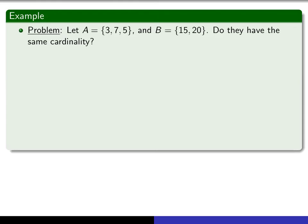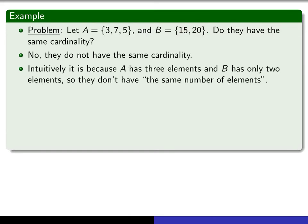And here's another example. Take A to be the set consisting of 3, 7, and 5, and B is the set consisting of 15 and 20. Again, we ask the question, do they have the same cardinality? So it's pretty clear that our intuition tells us no, they do not have the same cardinality. Intuitively, it's because A has three elements and B has only two elements. So they don't have the same number of elements.